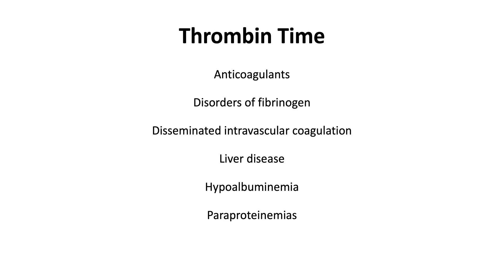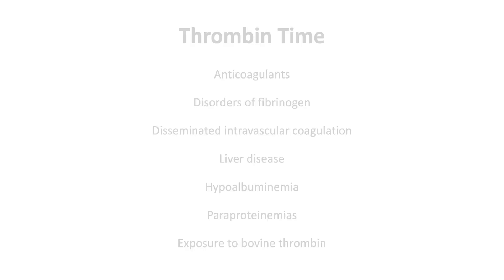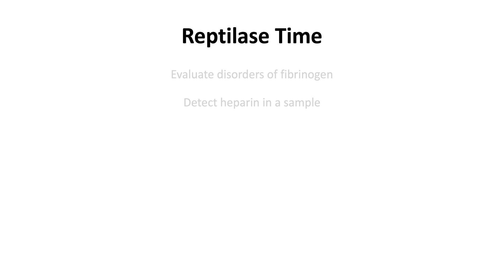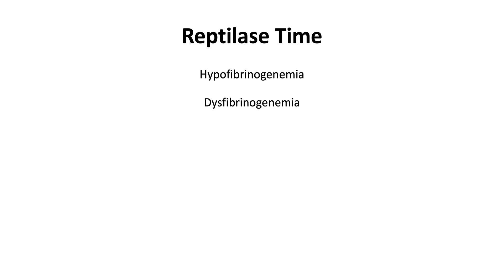Thrombin time may also be prolonged in patients who develop antibodies after exposure to bovine thrombin. The reptilase time can be used to evaluate disorders of fibrinogen and detect heparin in the sample when used with the thrombin time. A prolonged reptilase time can be seen with hypofibrinogenemia, dysfibrinogenemia, and anything that interferes with fibrin polymerization, including paraproteinemias and fibrin degradation products.